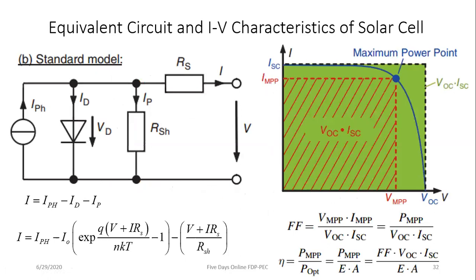The equivalent circuit of a solar cell is the single diode model, consisting of a current source, a diode, a shunt resistance, and a series resistance. The I-V characteristics have key parameters: short-circuit current (Isc), open-circuit voltage (Voc), voltage at maximum power point (Vmpp), current at maximum power point (Impp), and fill factor. Fill factor = maximum power / (Voc × Isc). A higher fill factor means higher power output, and it can be used to compare panels of the same technology.